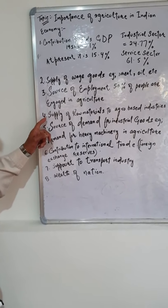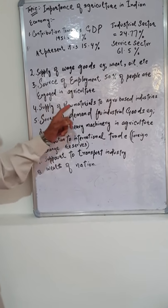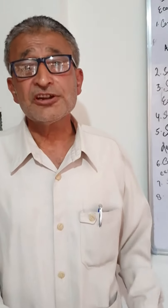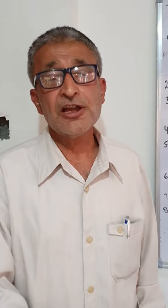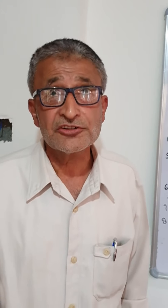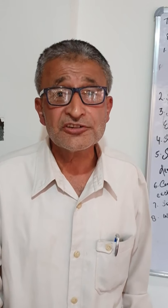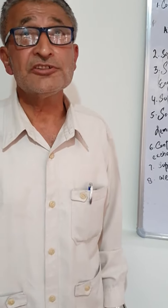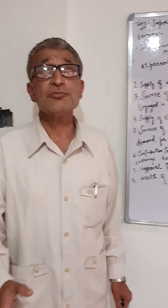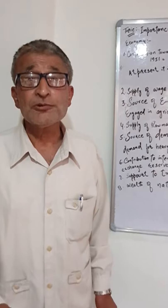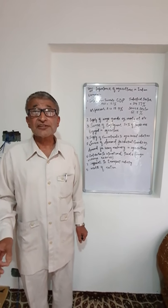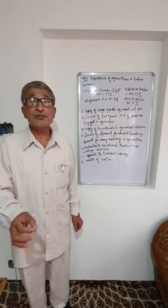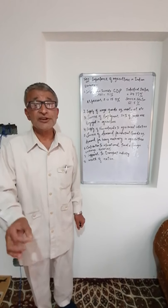Another important point is that agriculture is a source of raw materials for agro-based industries. Agro-based industries are those which get their raw materials from agriculture. For example, we have cotton textile industry, jute textile industry, sugar industry, and other industries. The cotton textile industry is the largest large-scale industry and employs a good number of people. Agriculture supplies the raw material to all such agro-based industries.